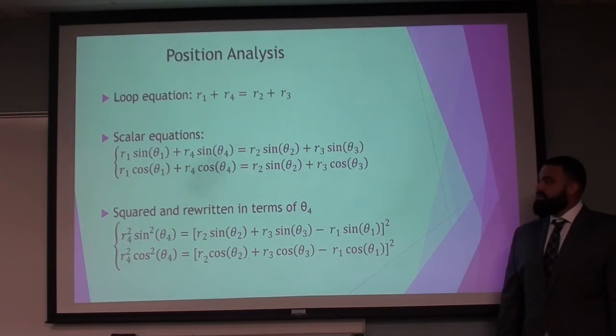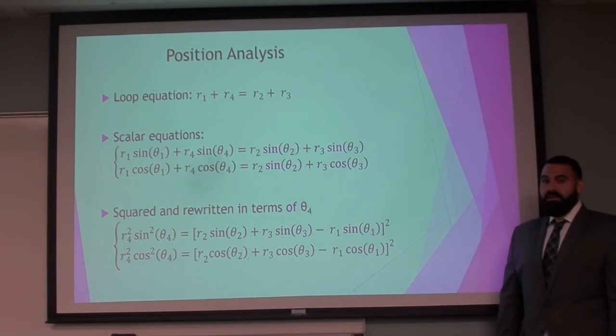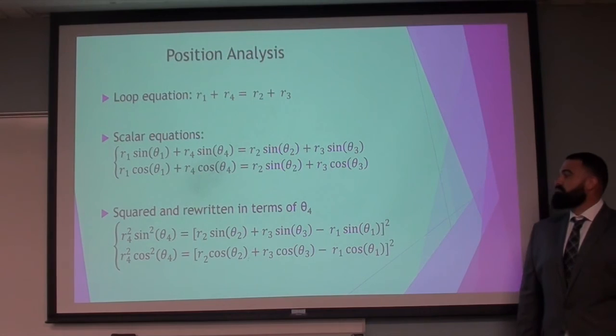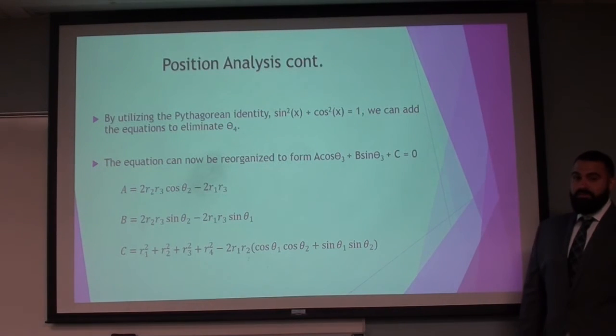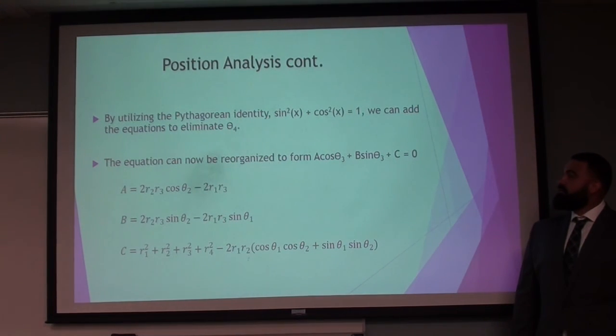You can square each equation and rewrite in terms of theta 4. And then by utilizing the Pythagorean identity, we can add the equations together to eliminate theta 4.